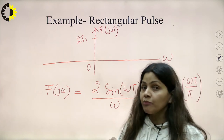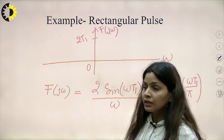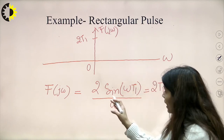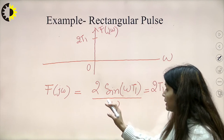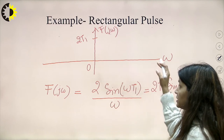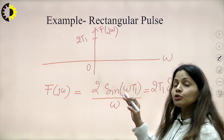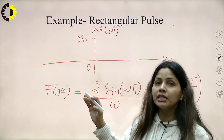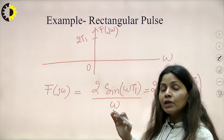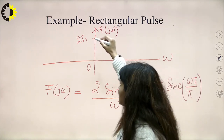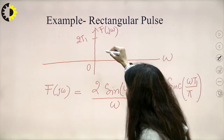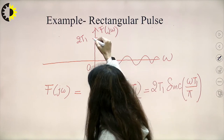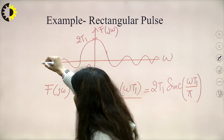Since it is a sinusoidal function divided by omega, as omega increases, this function decreases because omega is in the denominator. There must be oscillations — if it were only a sine function there would be simple sinusoidal oscillations — but since omega is increasing in the denominator, the magnitude of F(jω) decreases with oscillations.